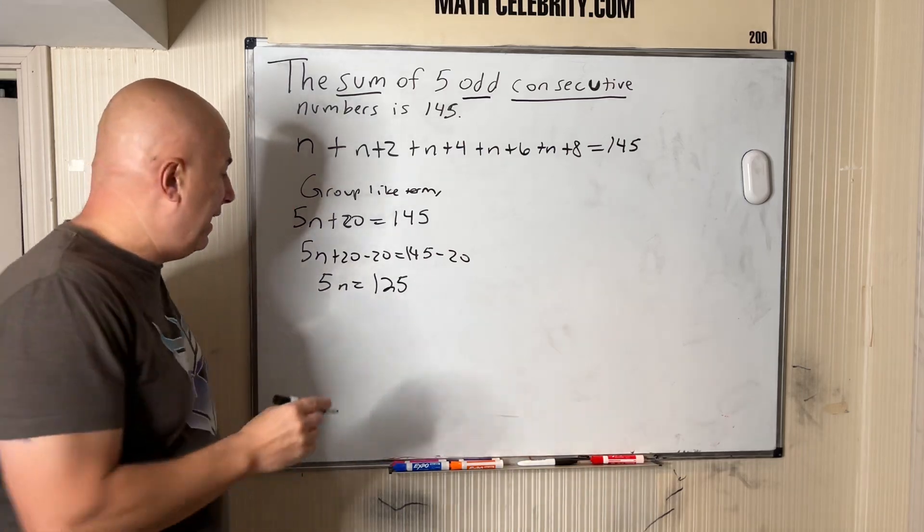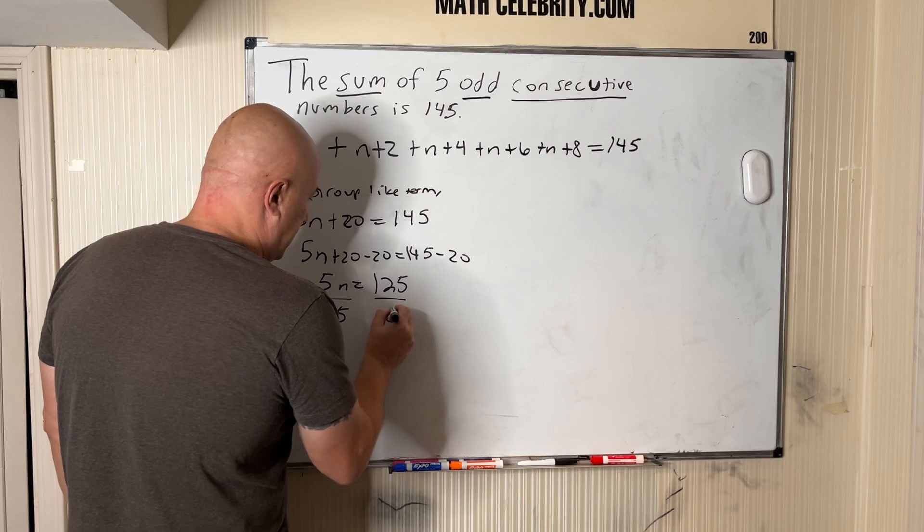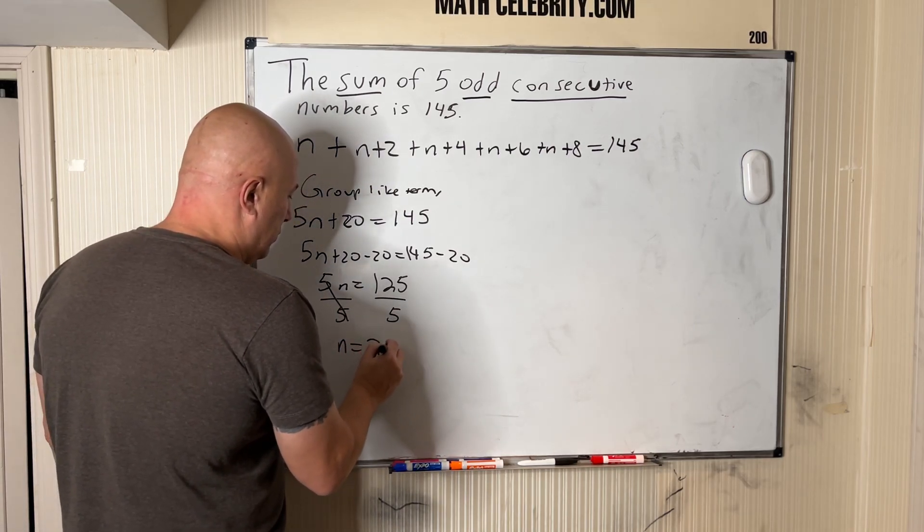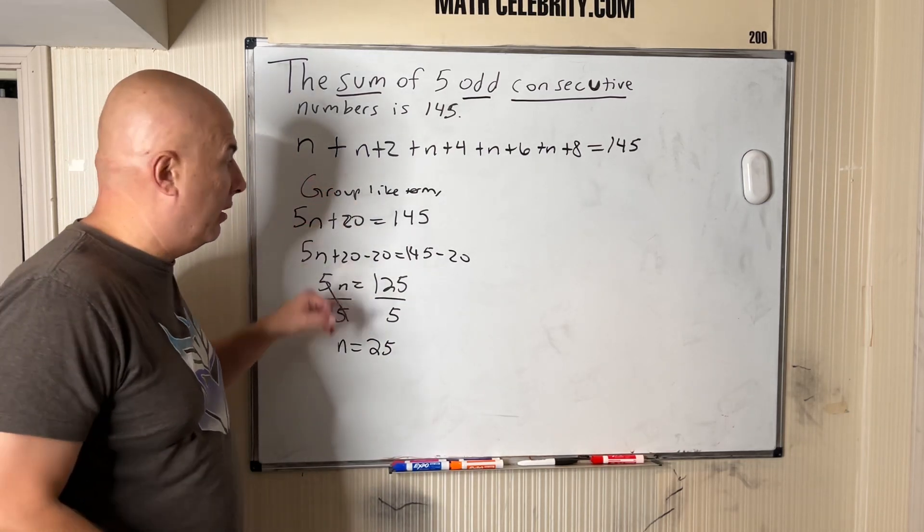We're going to divide each side by five to isolate n. These cancel, we get n equals 25. So that means n is our first consecutive number of the five.